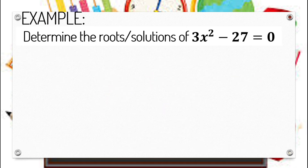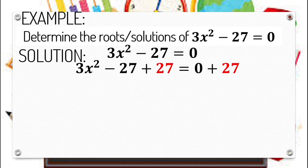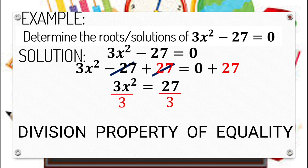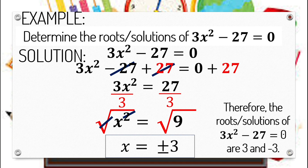Let's have the third one. Determine the roots or solutions of 3x squared minus 27 equals 0. We first transpose negative 27 to the right side using the addition property of equality, giving us 3x squared equals 27. We cannot yet apply extracting square roots because the quadratic term has a numerical coefficient of 3, so we divide both sides by 3 using the division property of equality. The simplified form becomes x squared equals 9. Since 9 is a perfect square, x equals positive negative 3. Therefore, the roots of 3x squared minus 27 equals 0 are 3 and negative 3.